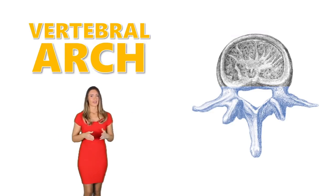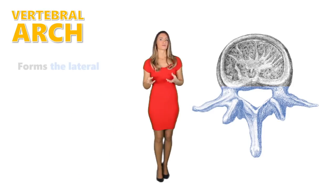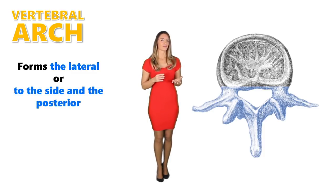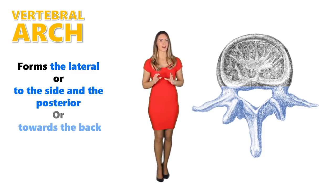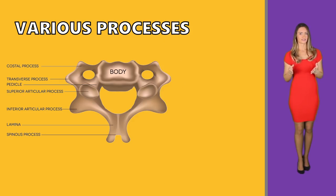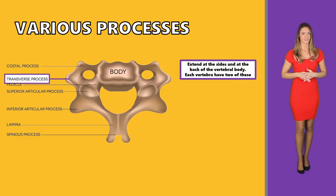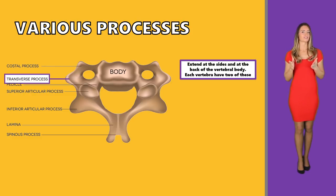The vertebral arch. If the vertebral body forms the front portion of the vertebrae, the vertebral arch forms the lateral, or side, and posterior, or towards the back, portions. The vertebral arches have various processes, which are bony prominences where ligaments and muscles attach. Starting with the transverse processes — these extend at the sides and at the back of the vertebral body. Each of the vertebrae have two of these.